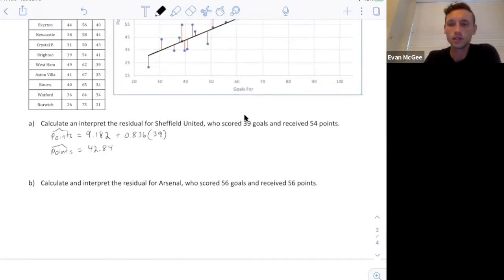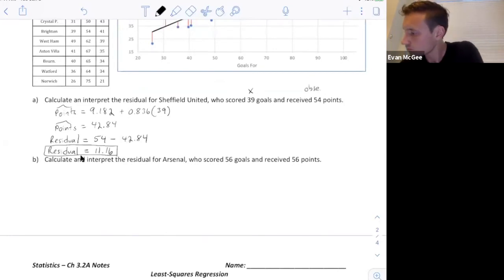Here's the first step. We plugged in x, the observation, and found that a team that scored 39 goals, we'd expect to score 42.84 points in the season. The residual, we compare it with how many they actually scored. You can see they had a positive residual of 11.16, which means they ended up having 11 more points than expected based on the number of goals that they scored.